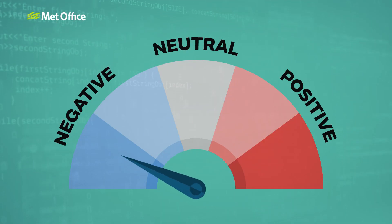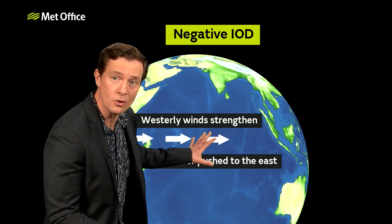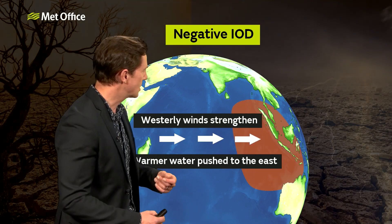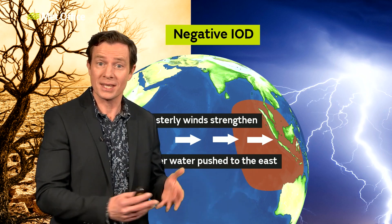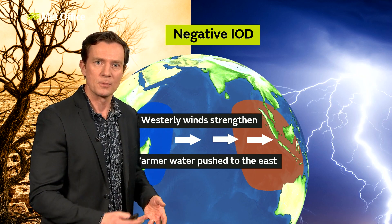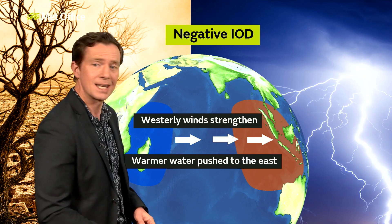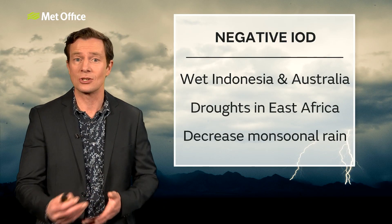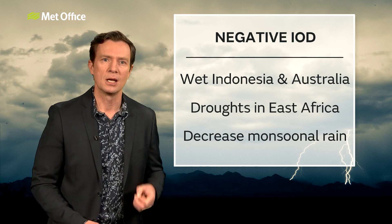Now let's look at what happens when we get a negative IOD. A negative phase occurs when westerly winds at the surface are stronger than normal across the ocean, resulting in pushing of the warmer waters to the eastern side of the ocean, and the temperatures in the western Indian Ocean being lower than average. The warming on the eastern side creates more rainfall in the same way, and the pattern is totally reversed. During a negative phase, rainfall is increased on the eastern side, but cooler waters on the western side of the ocean means that rainfall is decreased there. So when the IOD is negative, it can lead to flooding in Indonesia and parts of Australia, and droughts in eastern Africa. It can also lead to a reduction in rainfall during the southwest monsoon season across the Indian subcontinent.